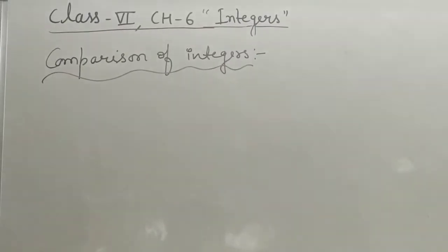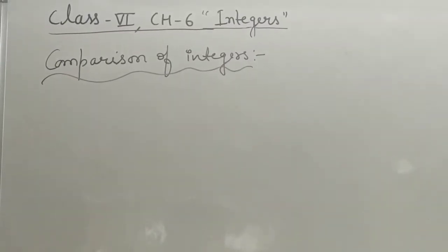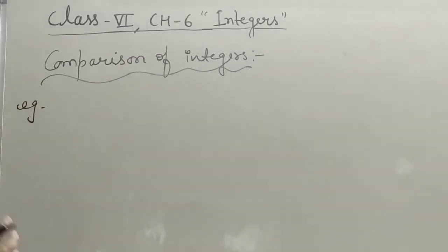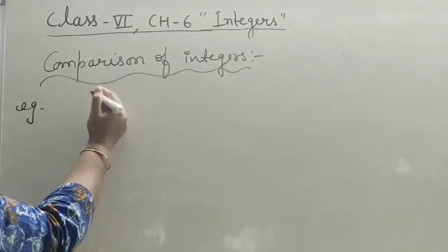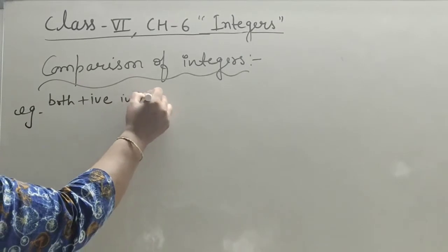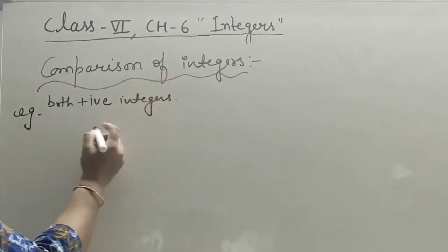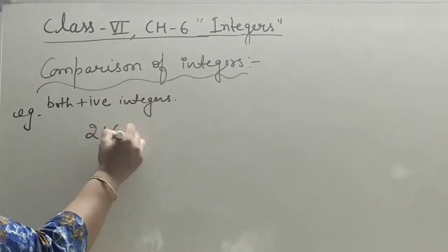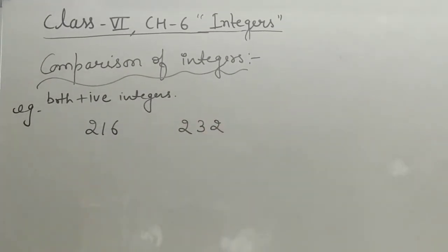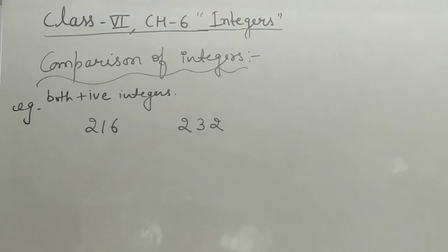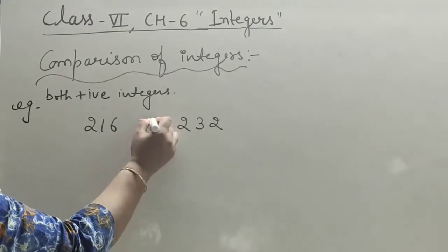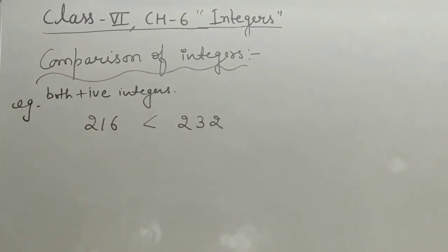Now come to the next topic: comparison of integers — how we compare integers to determine which is bigger or smaller. The first example: if both integers are positive, it is very simple to compare. For example, 216 and 232 — you can observe and compare directly. 232 is the greater number.